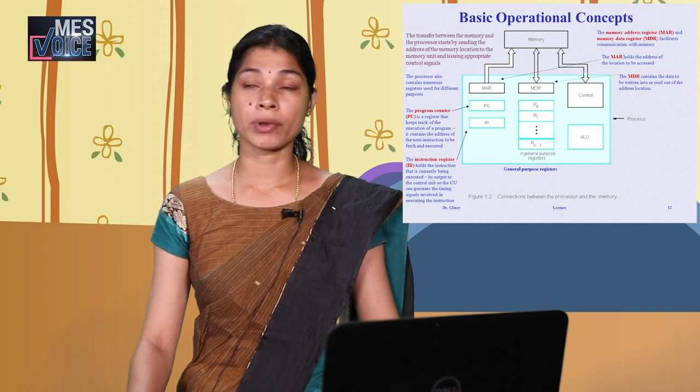Next, we go to the basic operational concepts of the computer system. This topic is mainly focused on different registers, the control unit, and memory. From the figure, you can see that it contains memory, different types of registers, general purpose registers, and ALU — all contained in the processor. A register stores one bit of information and we classify registers into general purpose registers, named R1, R2, up to R(n-1), and special purpose registers.